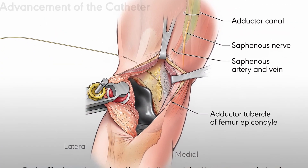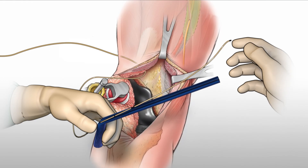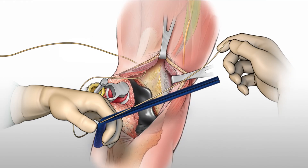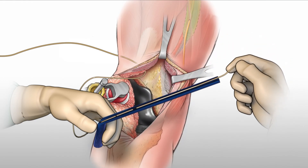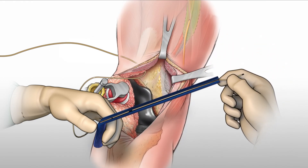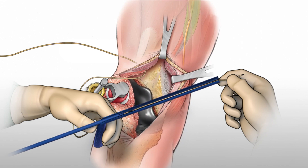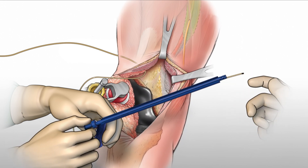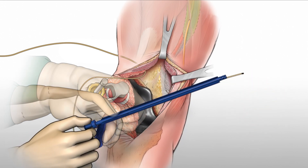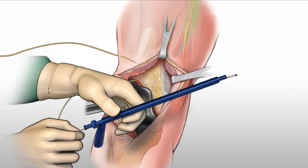The distal end of the catheter is then grasped and placed into the internal slot inside the slotted cannula of the MAC-B introducer, with the free end coming out distal to the handle. The catheter is secured by sliding the trocar into the slotted cannula and pulling the catheter tip back flush with the distal end.